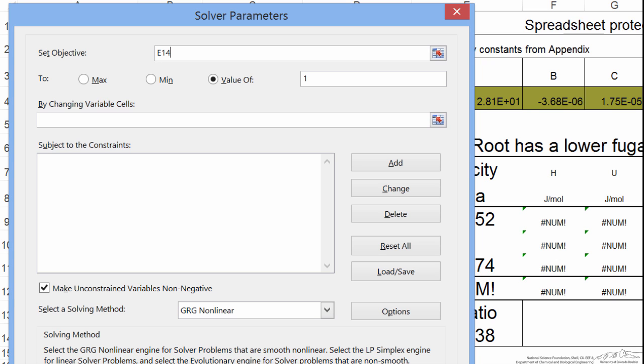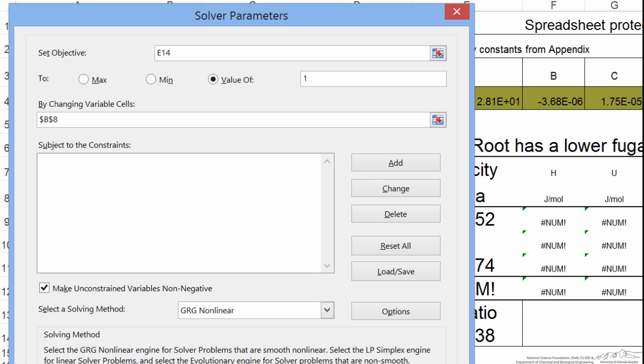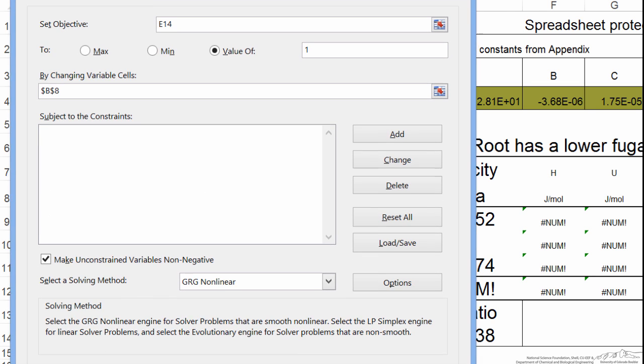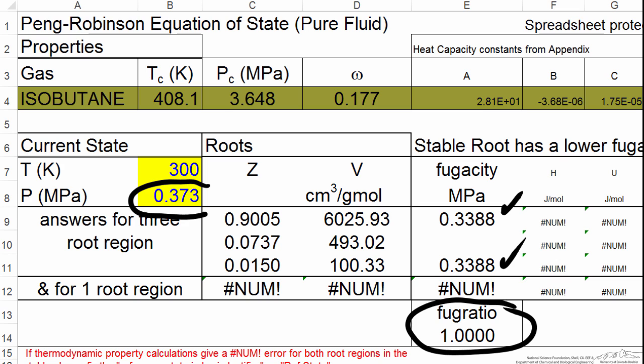Our objective is to set the value of E14 equal to 1. And we're going to do that by changing the value for the pressure. And so when I hit solve, let me move this so you can see it. If I hit solve, it's solved for the fugacity ratio. It's made the ratio 1. The values are the same here. And this says this is our saturation pressure, 0.373 MPa.